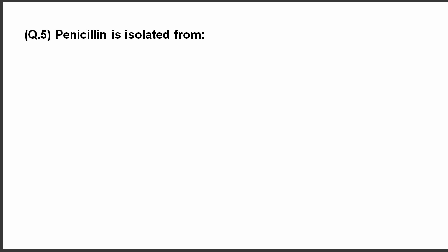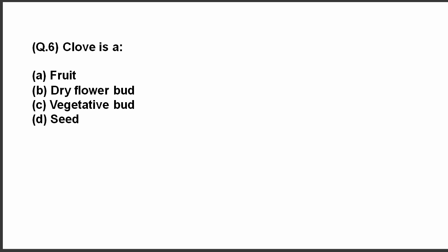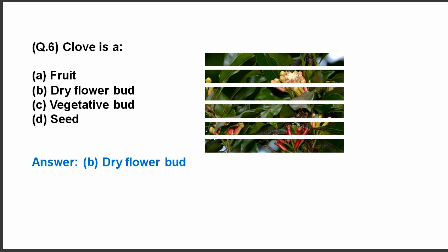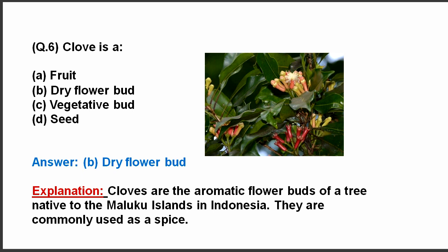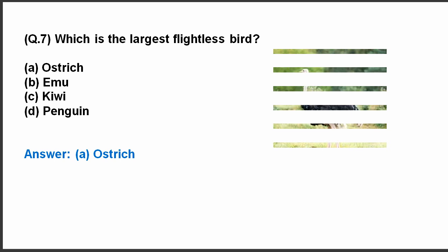Question number 5. Penicillin is isolated from? Here are the options. The correct answer is fungi. Moving on to the next question. Clove is a? Here are the options. The correct answer is dry flower bud. Next question. Which is the largest flightless bird? The answer is ostrich.